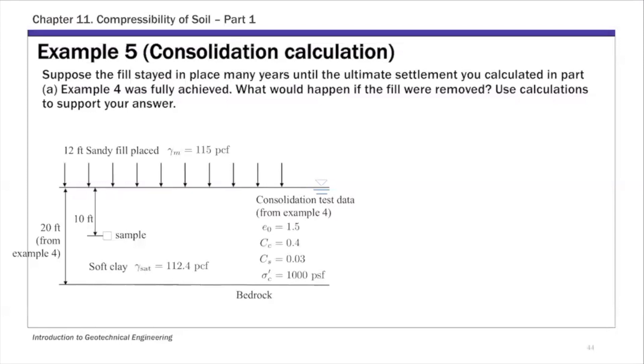This is example 5 of chapter 11, basically part 2 of that problem in example 4. In example 4, we placed 12 feet of sandy fill on top of a soft clay layer. In this example, we're going to calculate what will happen if we remove that sandy fill after ultimate or the primary consolidation settlement has been fully achieved. So basically we're removing loading from the clay and calculating the rebounding in this case.